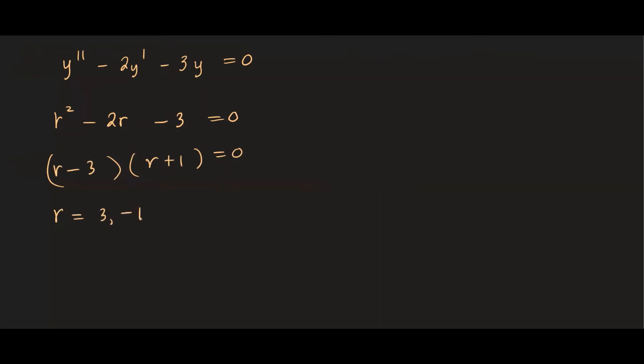All right, so we have two real roots. So that means our solution y1 is going to be e^(3t) and y2 is going to be e^(-t). And we know the general solution will be the linear combination of this. But we want to check if the Wronskian is non-zero for these pair. So let's go ahead and do that.